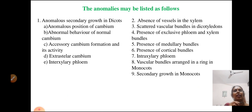What are the anomalies? Anomalous secondary growth in dicots may be due to the anomalous position of cambium, abnormal behavior of normal cambium, accessory cambium formation and its activity, extra-stellar cambium and inter-xylary phloem.